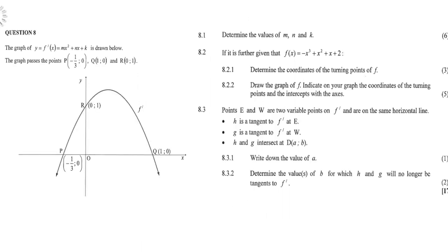Question 8, the second question in calculus. The graph of y equals the derivative of x equals mx squared plus nx plus k is drawn. Of course, the derivative of a cubic graph will be a quadratic equation or a parabola. Therefore, the graph looks like a parabola.